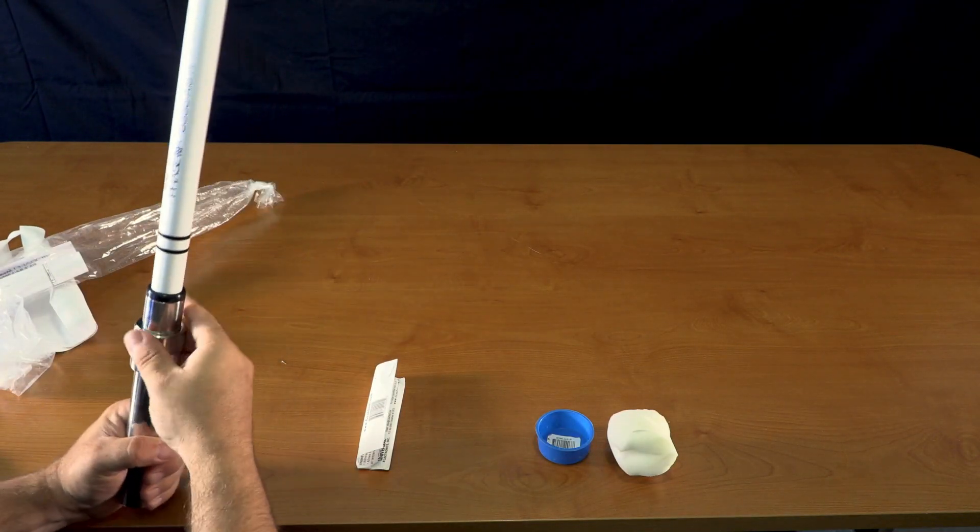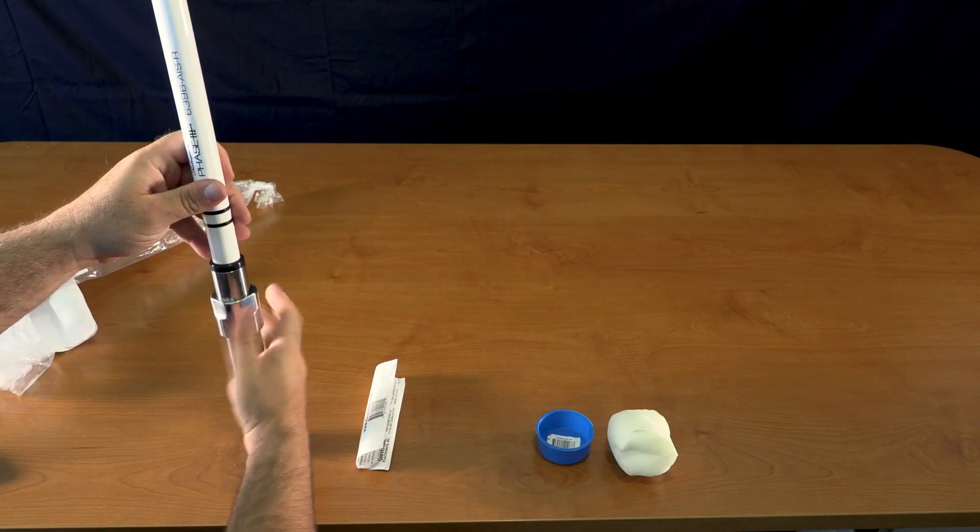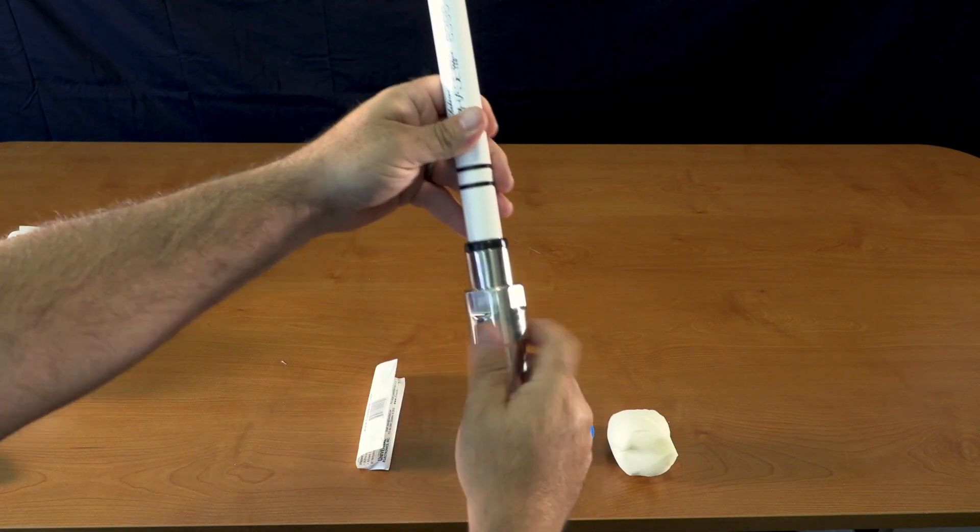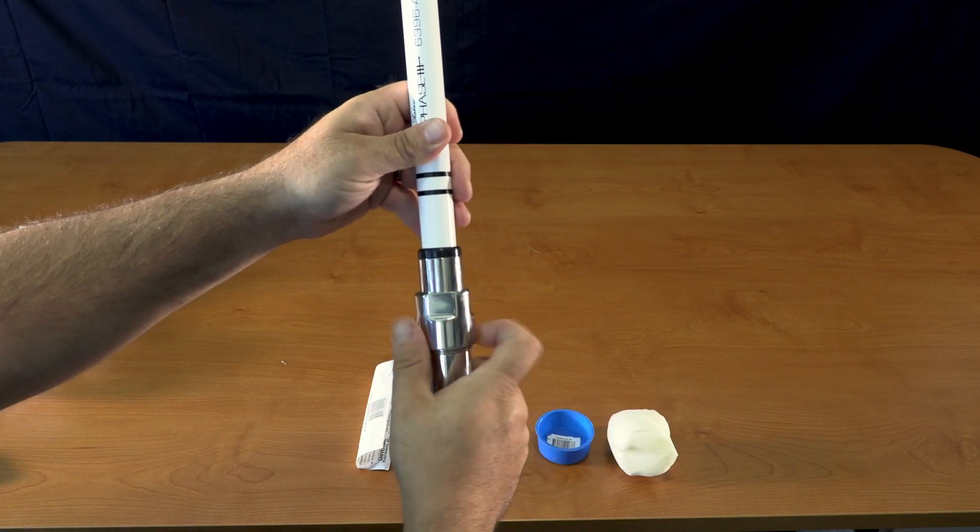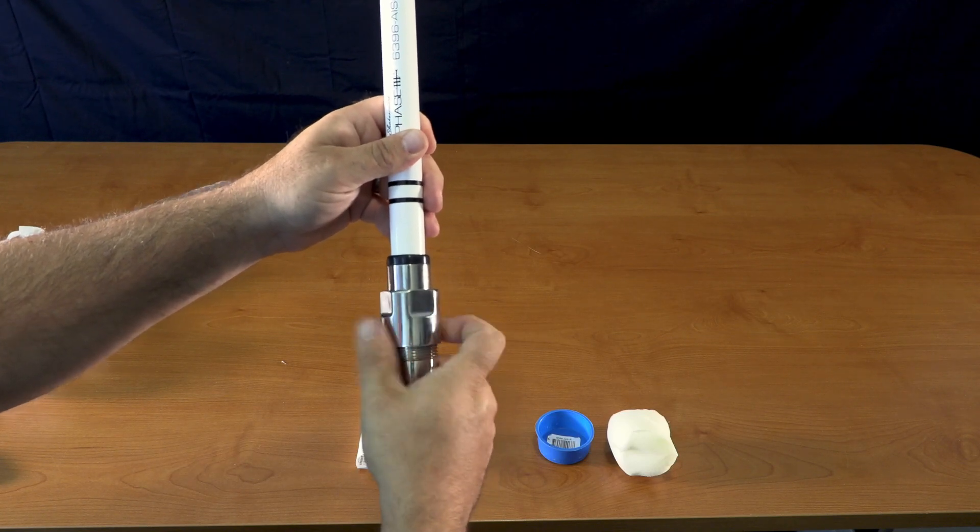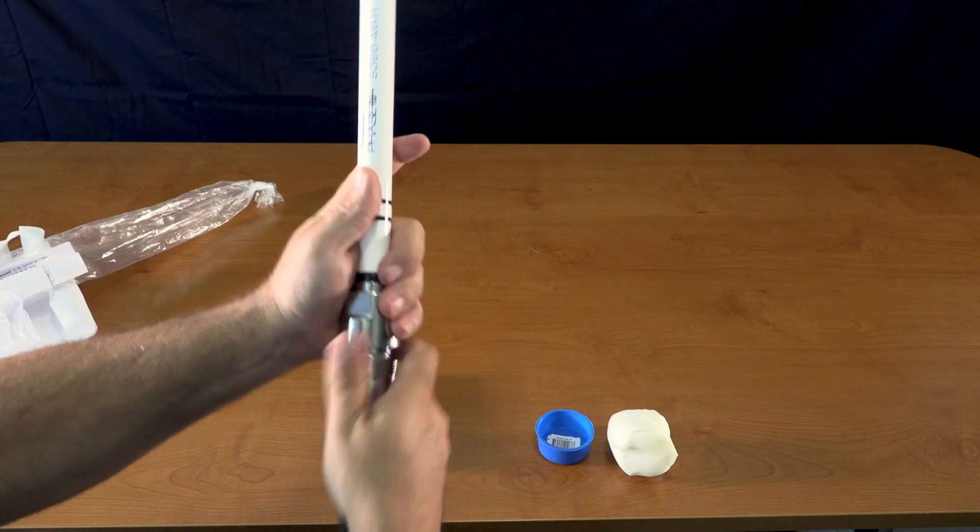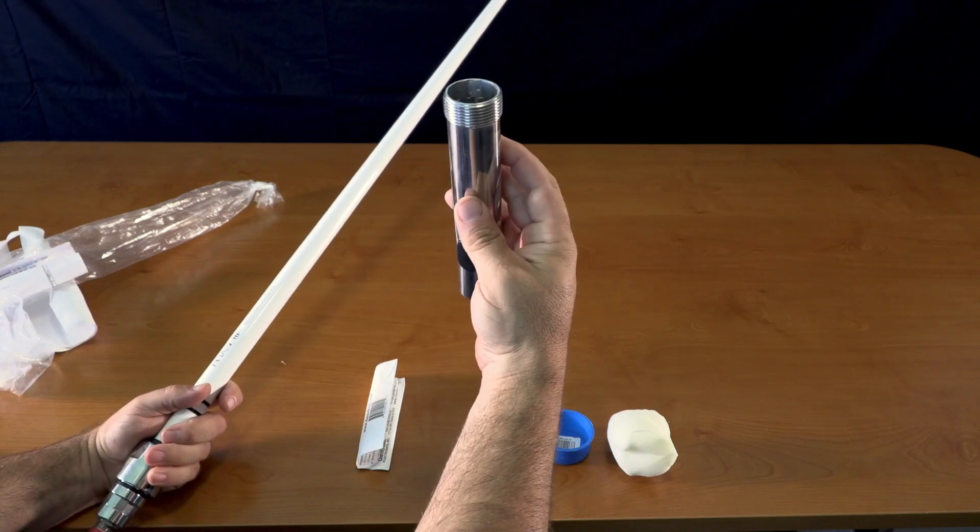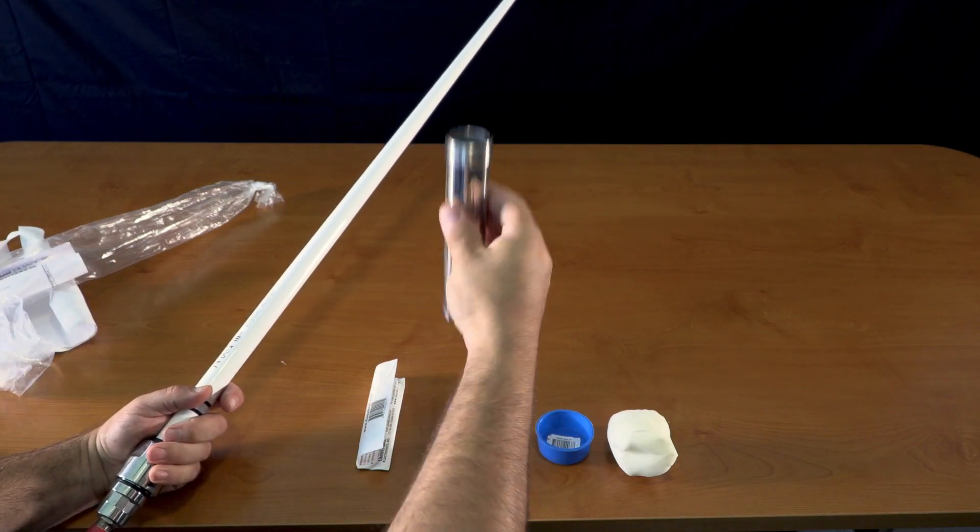So here's the antenna itself. It actually will unscrew, allowing you to remove the antenna itself, and this can remain on your boat.